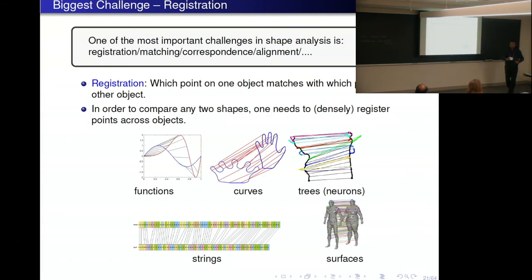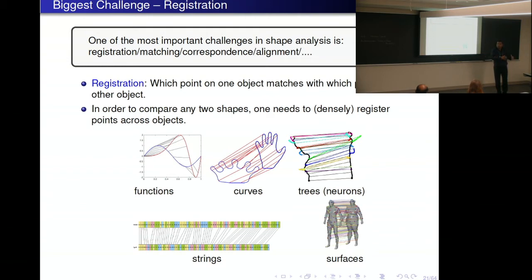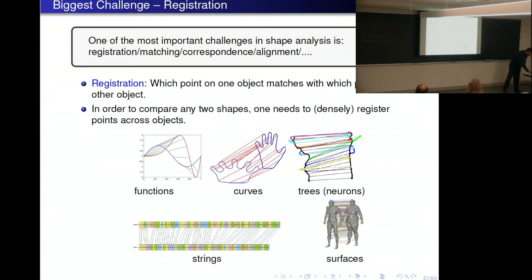This drives the main point of what our work — a number of people working in so-called elastic shape analysis — aims to do: not only do shape analysis and morphometry, but also provide registration as part of the analysis.